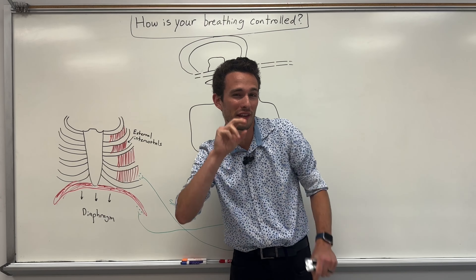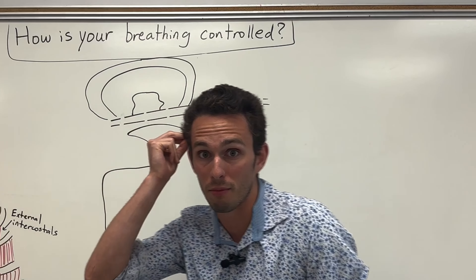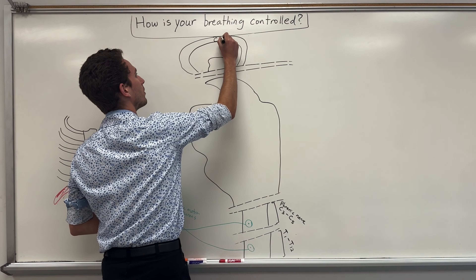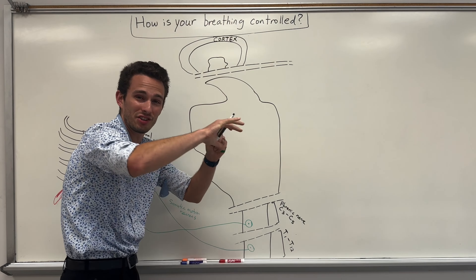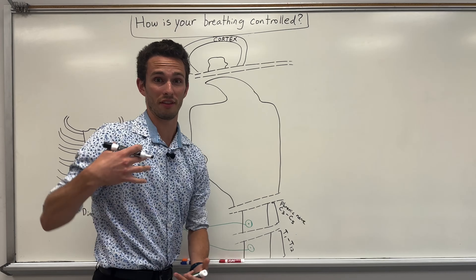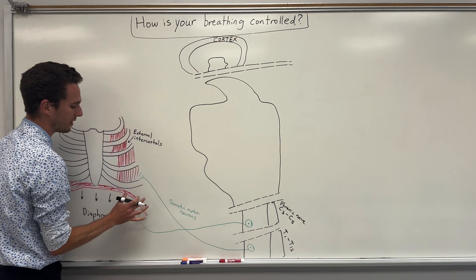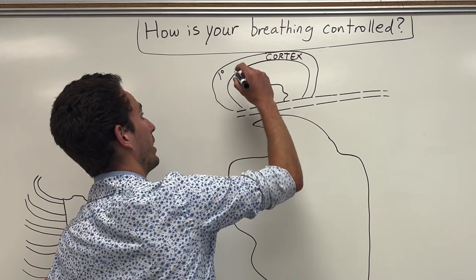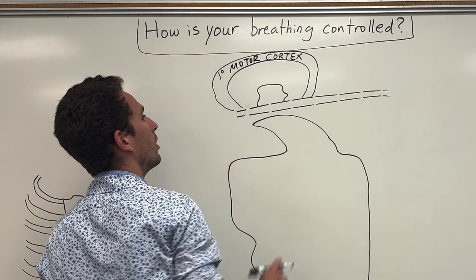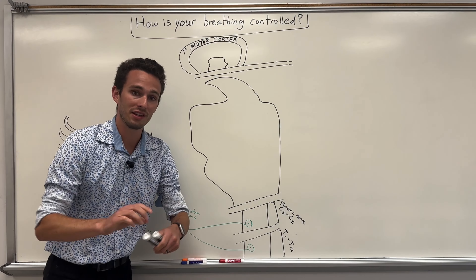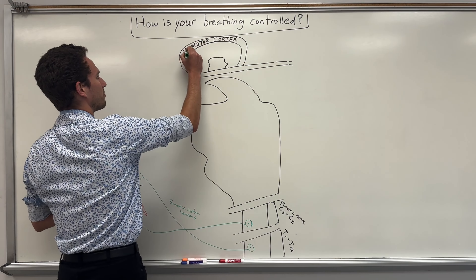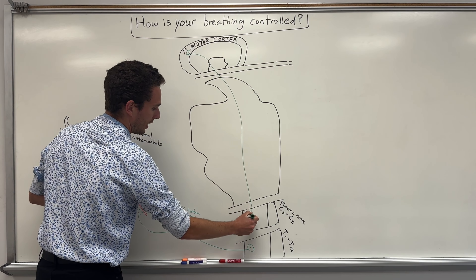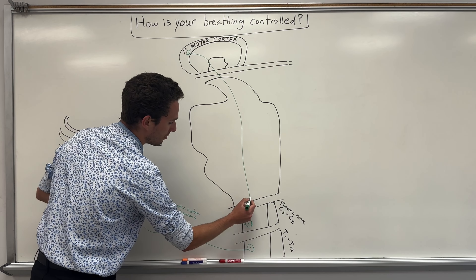But how did you control that? Well, if you can consciously control something, it's got to come from the higher regions of your brain, specifically in the cortex — basically the outside part of your brain. There's a lot of gray matter, and we're talking about moving muscles here, so we're talking about a specific area called the primary motor cortex. In the primary motor cortex, there will be things called upper motor neurons, and they will extend from the primary motor cortex all the way down through the brainstem, down through the spinal cord, and synapse with both of these neurons.